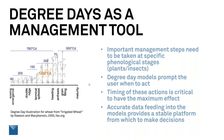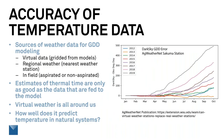There are important management steps that need to be taken at specific phenological stages, whether we're talking about plants or insects. Our degree day modeling allows us to know when to act, but timing is everything. If we just go out and spray for coddling moth when it's on the list — without knowing the degree days — we don't know if we're going to have that maximum effect. Accurate data feeding into these models provides a stable platform from which to make decisions.